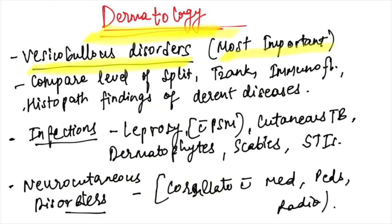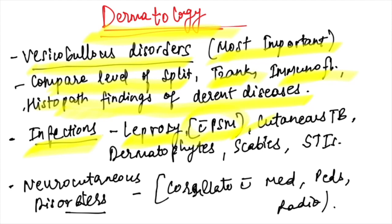In dermatology, vesicobullous diseases are most important — compare the level of split, Tzanck smear, immunofluorescence, and histopathology findings across different diseases. For infections, leprosy should be correlated with the eradication program and PSM. Also revise cutaneous TB, STIs, scabies, and dermatophytes, as these are very commonly asked.